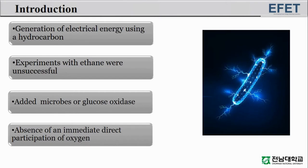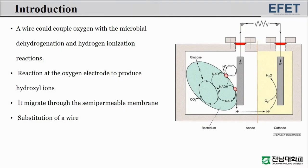To determine if microbes could generate electrical energy using a hydrocarbon, experiments were initiated. Experiments with ethane were unsuccessful. When microbes or glucose oxidase were added to a solution of glucose, electrical output was observed. Biological dehydrogenations take place in the absence of an immediate direct participation of oxygen. A wire could couple oxygen with the microbial dehydrogenation and hydrogen ionization reactions. The electrons transferred would react at the oxygen electrode to produce hydroxyl ions.